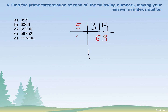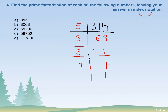63 is not divisible by 5, so we will find another prime number. There is 3. 3 times 21 is 63. 7 times 3 is 21, so now 7 is again a prime number. 7 times 1 is 7. Now the question is asking you to write the answer in index notation, that is in the form of powers.